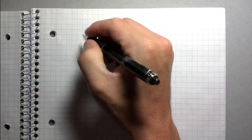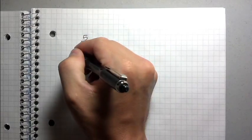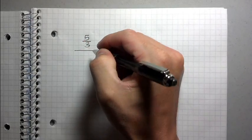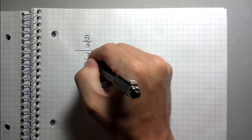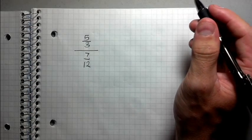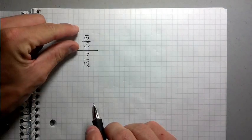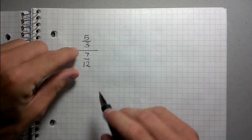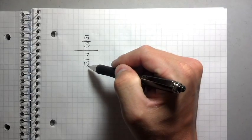It's like if you had five thirds divided by seven twelfths. The reason it's called a complex fraction is because it's sort of like a fraction within a fraction. You have a fraction divided by another fraction.